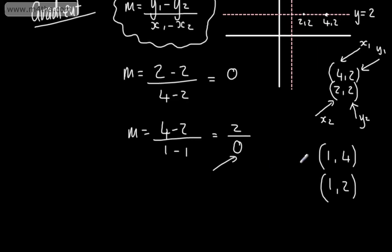Just while we're here — I didn't need to do 4 minus 2; I could have done 2 minus 4. That would be perfectly fine, as long as we're consistent. So we can do 4 minus 2 over 1 minus 1, or 2 minus 4 over 1 minus 1. In later examples, when these values are different, that will make a little more sense.